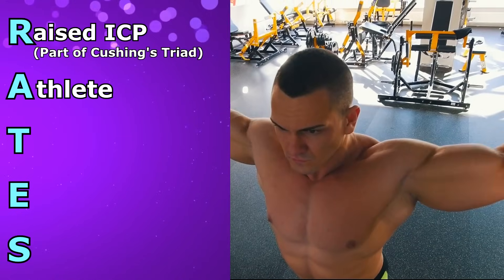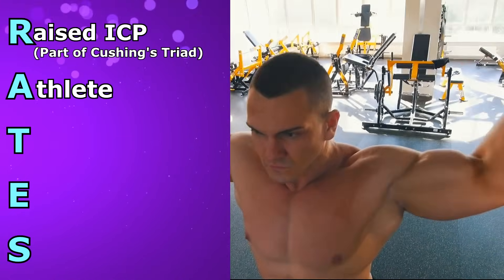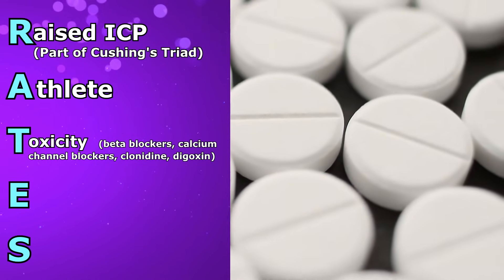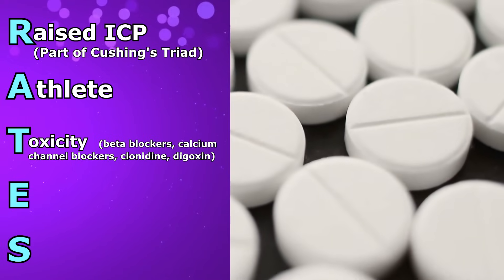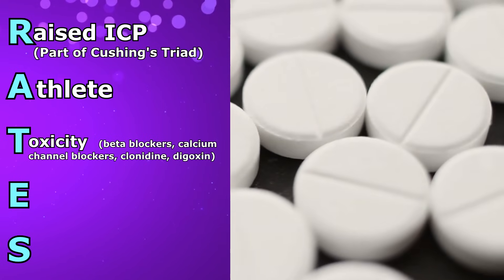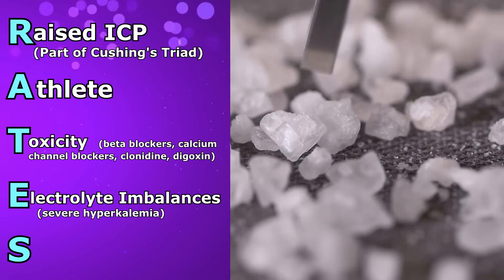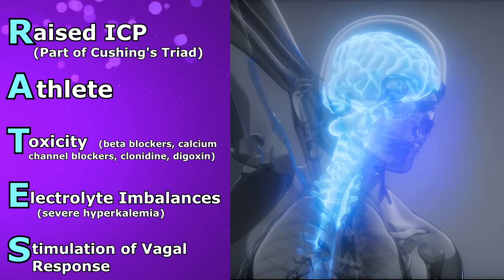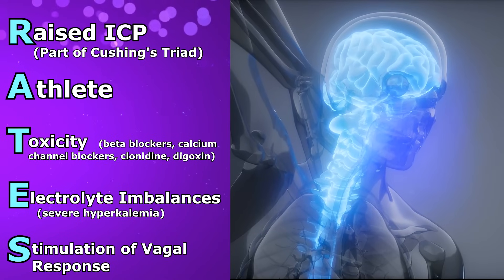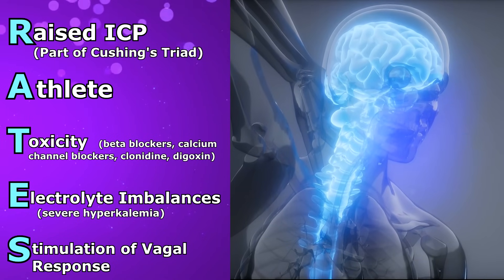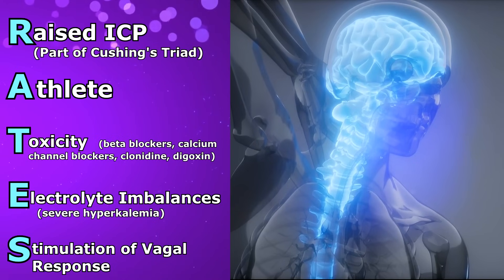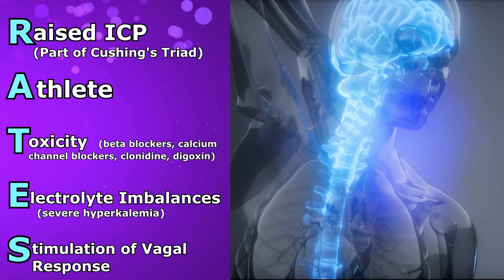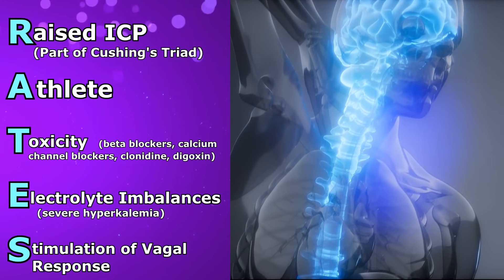A is for athlete — their heart is very well conditioned, so it beats at a slower rate. T is for toxicity of beta blockers — those medications whose generic name ends in -olol — as well as calcium channel blockers like verapamil, digoxin, and clonidine. E is for electrolyte imbalances, like severe cases of hyperkalemia. S is for stimulation of the vagal response — an overactive vagal response, because the vagus nerve connects to our SA node and causes the heart to beat slower, can cause bradycardia, as can conditions where the patient is vomiting.